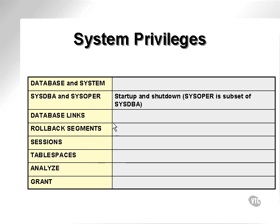Other privileges, as you can see in this list below, are database and system privileges. Database and system privileges are privileges that allow us to change the database itself, as opposed to the tables. Database privileges are tables-based privileges and changing the aspects of the system itself, such as archive logs and redo logs. Most of this is database administration.